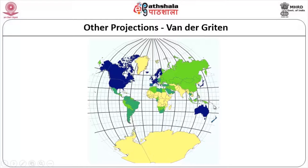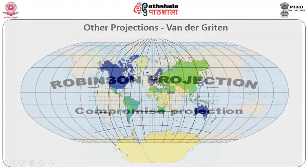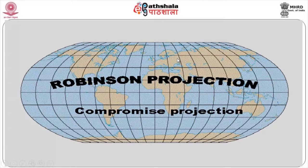They follow some method to see that errors are not concentrated in one particular place — they try to distribute the errors throughout so there will not be any accumulated errors. Van der Grinten shows the earth almost like a globe — you can see meridians, parallels, the equator and other parallels, all appearing similar to a globe.